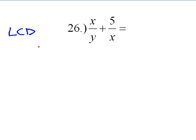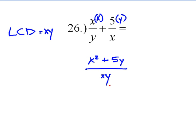So let's get started with this one that looks fairly simple. The least common denominator in this one would be x times y. So we have the y portion, we need to multiply this by x. We have the x, so we need to multiply this by y. So what we end up with is x squared plus 5y over our least common denominator of xy.